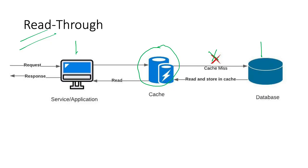In cache-aside, it was the application that would read from the database and update the cache — but in read-through, it is the cache doing that. Read-through is primarily used when you have read-heavy workloads with a lot of requests hitting your application. The downside is that if data is not available early, you are making a round trip to the database — it is a lazy loading strategy. To work around this, you can pre-warm the cache by loading all database entries directly before the application starts serving responses.